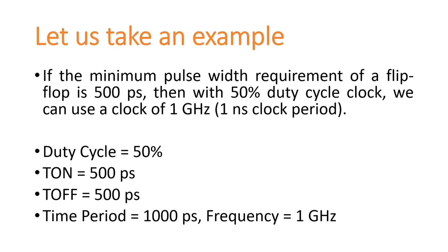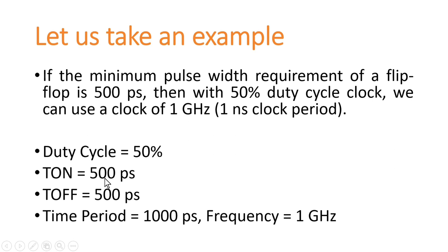Let us look at a practical example. The minimum pulse width requirement of a flip-flop is 500 ps, and assume both high and low width requirements are 500 ps. With a 50% duty cycle clock, T-on can be a minimum of 500 ps; since duty cycle is 50%, T-off equals T-on = 500 ps. Time period equals T-on plus T-off = 1000 ps, giving a maximum operational frequency of 1 GHz.